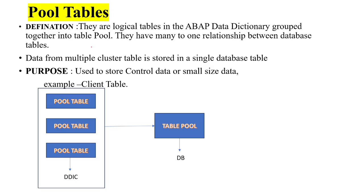Now let us see what a pool table is. Pool tables are logical tables in the ABAP dictionary which are grouped together into a table pool, and they also have a many-to-one relationship between database tables. Data from multiple pool tables is stored into a single database table. Pool tables are used to control data of a small size.